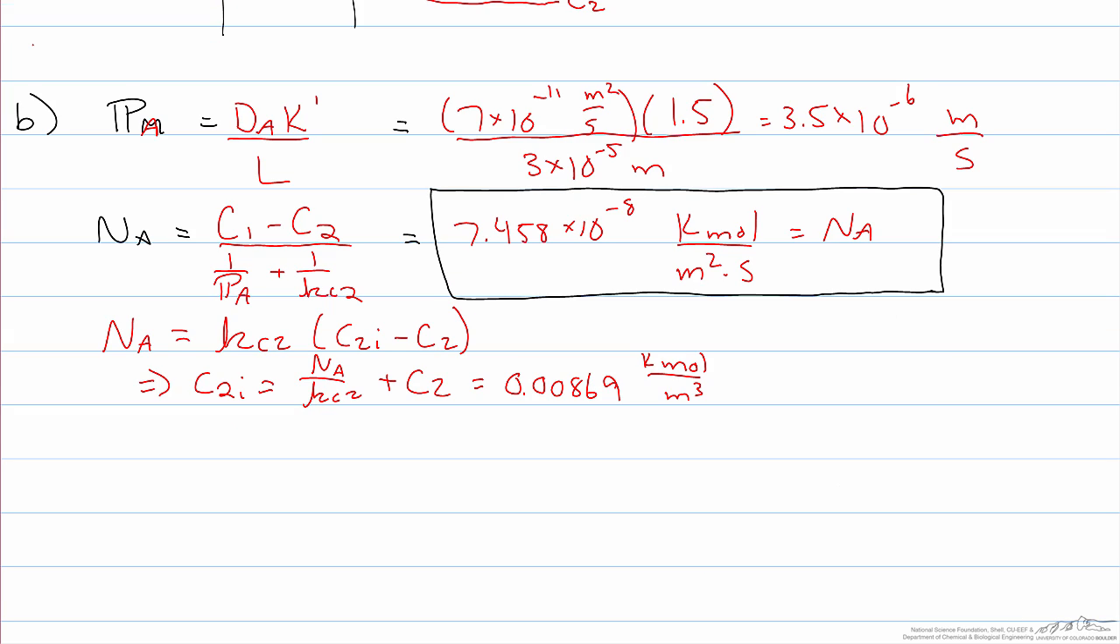The equilibrium constant is the concentration at the surface divided by that right next to the surface in the fluid phase. That then tells us that the concentration at the surface on the permeate side is 0.01304 kilomoles per cubic meter.